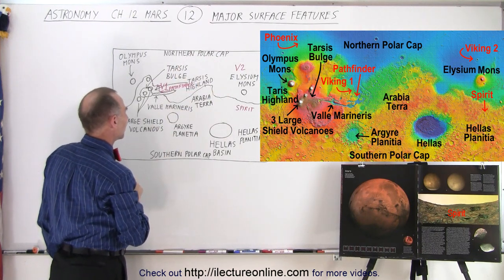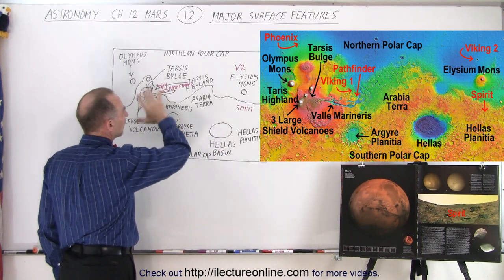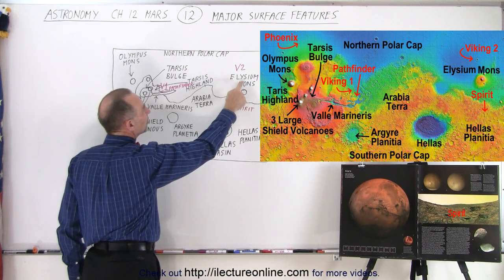So I think we've covered just about everything. We have the Argyre Planitia. We have the Hellas Basin. Yes, and then one more. There's another very large volcano on this side called Elysium Mons, another very large volcano.